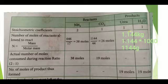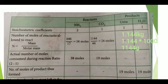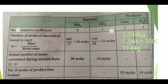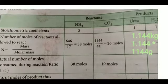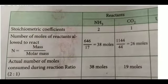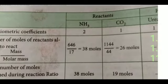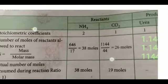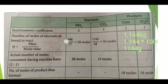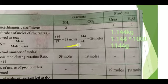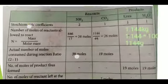Number of moles of reactants allowed to react: n = mass / molar mass. For ammonia, the given mass is 646 grams. The molar mass of NH₃ is 14 + 3 = 17 g/mol. Therefore, n = 646 / 17 = 38 moles of ammonia.